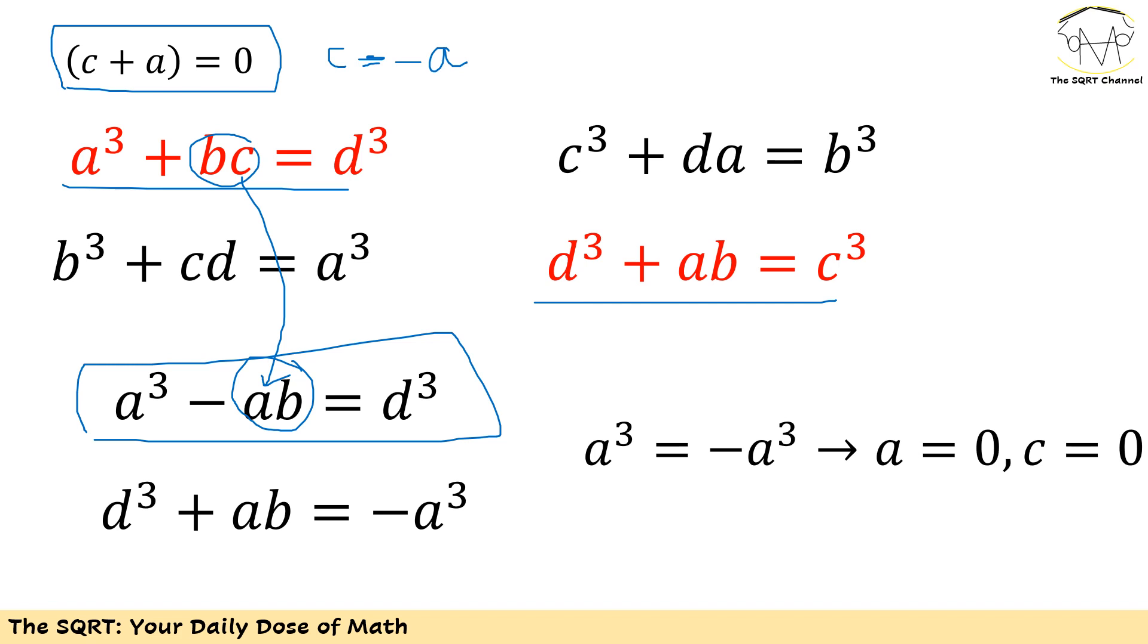Now if you carefully consider these two new equations, you will see that basically a³ should be equal to -a³. Obviously a = 0 is an answer here.